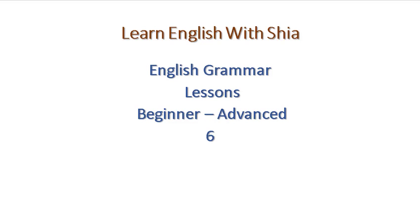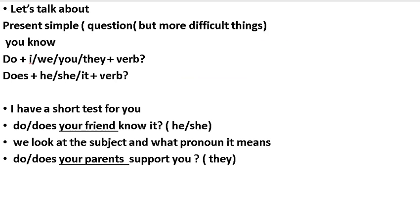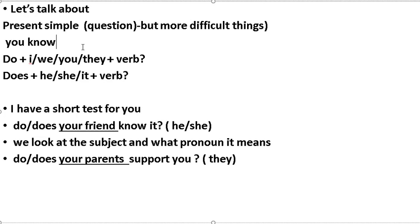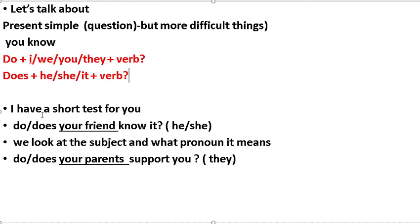Welcome back guys, welcome to my channel Learn English with Shia, Lesson 6. Let's continue. Let's talk about present simple questions. The more difficult thing is: we use 'do' with I, we, they — plus verb. We use 'does' with he, she, it — plus verb. I have a short test for you.